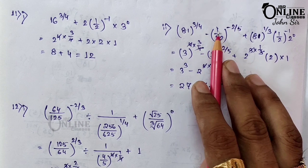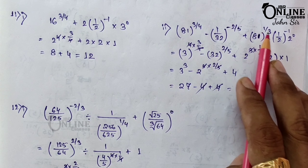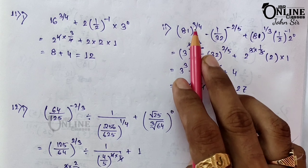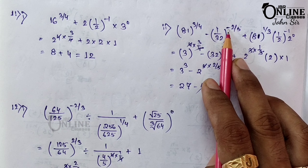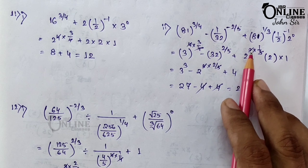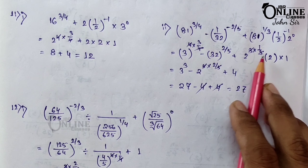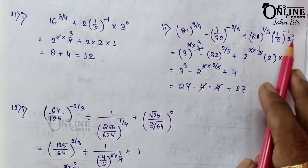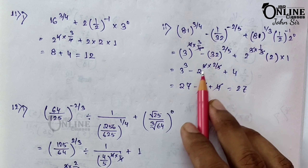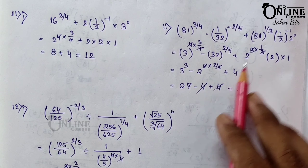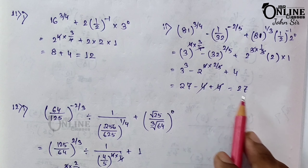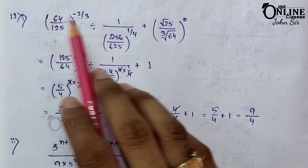Sum 11.2: 81^(3/4) − (1/32)^(−2/5) + 8^(1/3) × (1/2)^(−1) × 2^0. Here 81 = 3^4, so 4 × (3/4) gives 3^3. For (1/32)^(−2/5): with a negative exponent, change to reciprocal form giving 32^(2/5). 8 = 2^3 so 8^(1/3) = 2; (1/2)^(−1) = 2, and 2^0 = 1. Then 32 = 2^5, so 5 cancels giving 2^2 = 4. Result: 27 − 4 + 4 = 27.